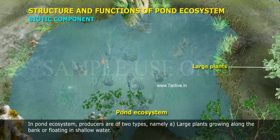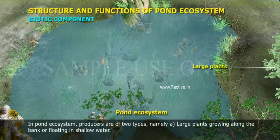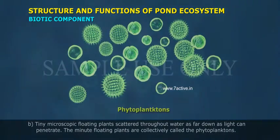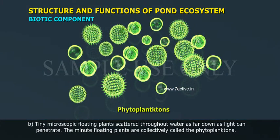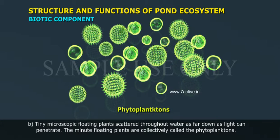In a pond ecosystem, producers are of two types: A. Large plants growing along the bank or floating in shallow water, and B. Tiny microscopic floating plants scattered throughout the water as far down as light can penetrate. These minute floating plants are collectively called phytoplanktons.